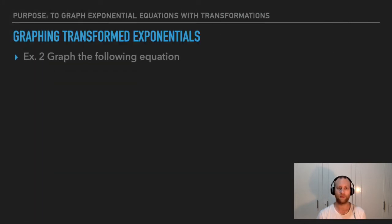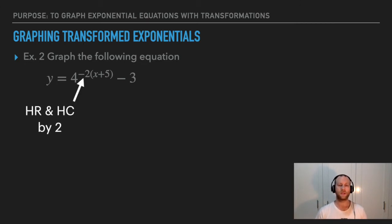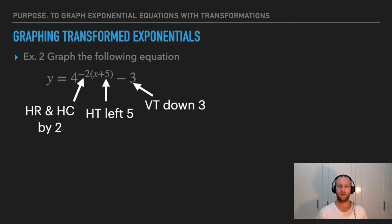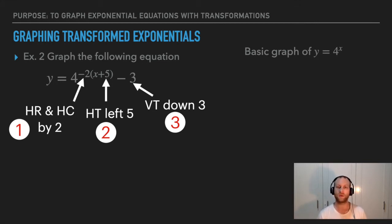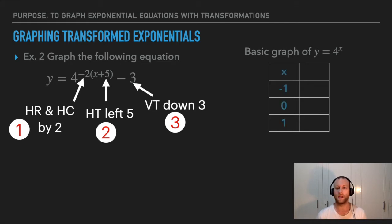Now we're going to graph. The first method looks at how the original graph four to the power of x changes. We have a horizontal reflection and compression by two, move left five, and move down three. To do this, we look at the original function — just like we'd look at x squared originally — and translate those points. We plug in random x values into four to the power of x and get the corresponding y values, giving us three points on the original graph to transform.